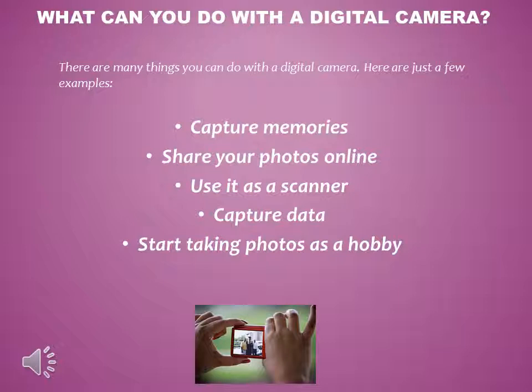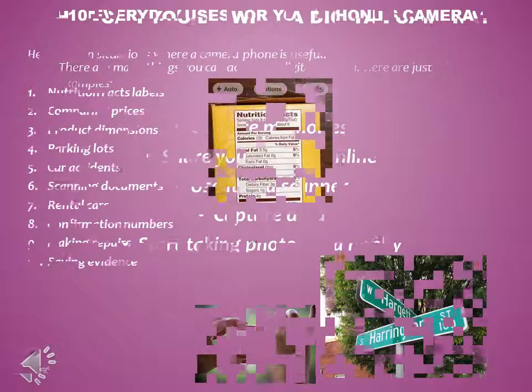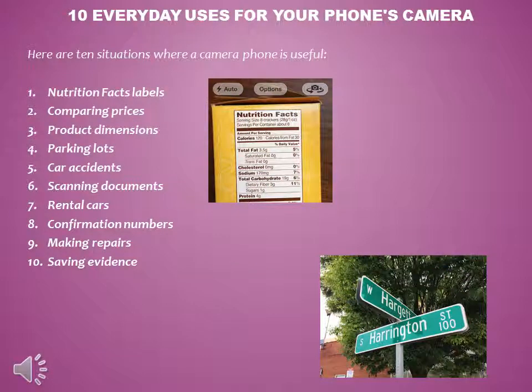If you have any more questions about things you might be able to do with a digital camera, please get in contact with me and I would love to assist you. Now I want to talk to you about ten everyday uses for your phone's camera. Nutrition facts labels — if you're keeping track of calories or other nutritional information, it might be easier to take a picture of the labels than write everything down. You can find this information on boxes, restaurant menus, or online.